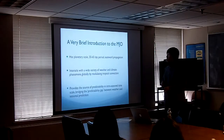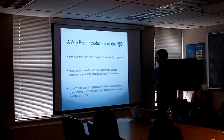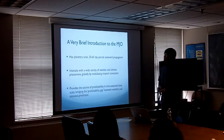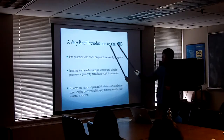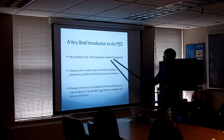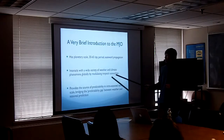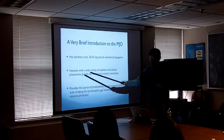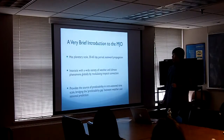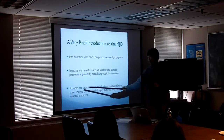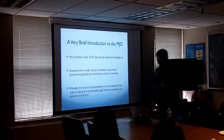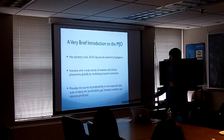To summarize this brief introduction: MJO has planetary scale, a 30 to 60 day period, propagates eastward, intersects with a wide variety of weather and climate phenomena globally by modulating tropical convection, and also provides a source of predictability on interseasonal timescales.